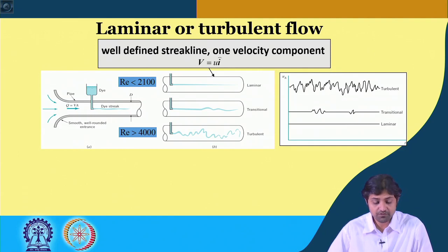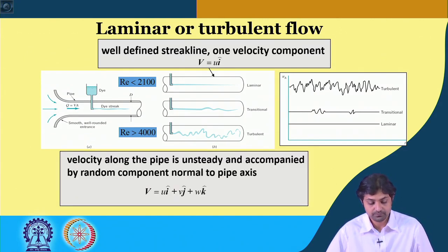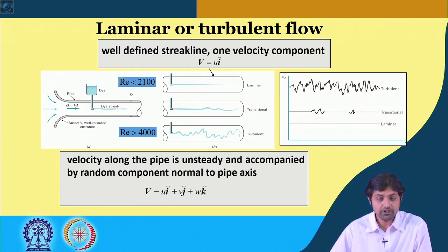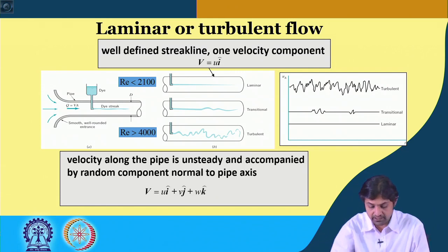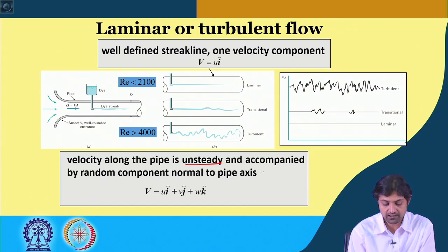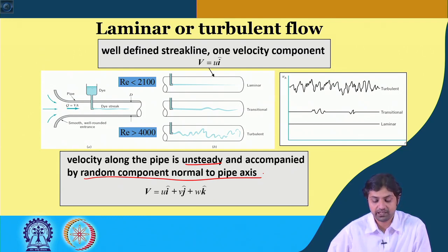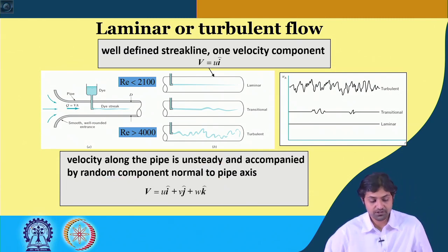For laminar flow there is a well-defined streak line and only one velocity component: u in the i-direction, where i-cap is the unit vector in the x-direction, so velocity is u i-cap. In turbulent flow the velocity along the pipe is unsteady and is accompanied by random components normal to the pipe axis. The velocity will be the sum in all three directions: u i-cap plus v j-cap plus w k-cap — that is an important property of turbulent flow.